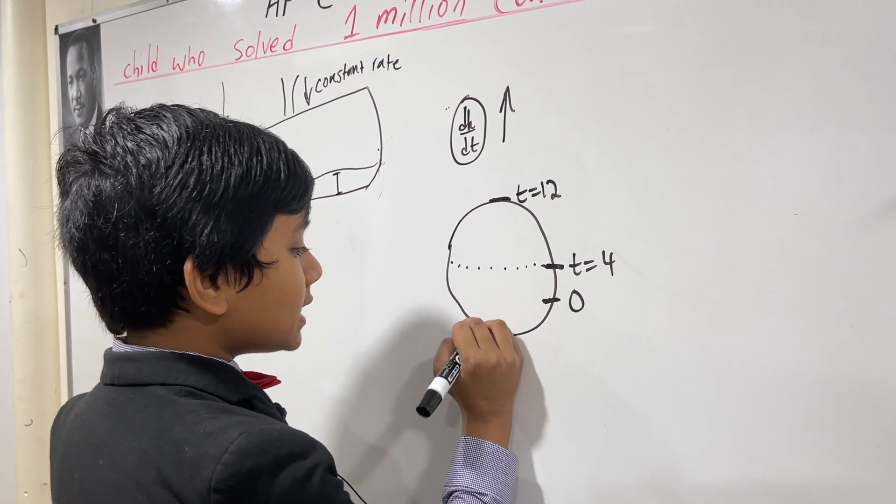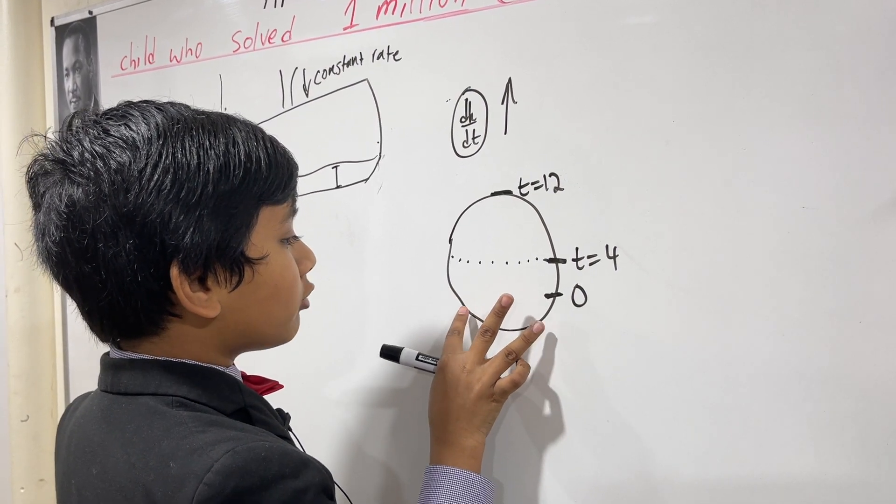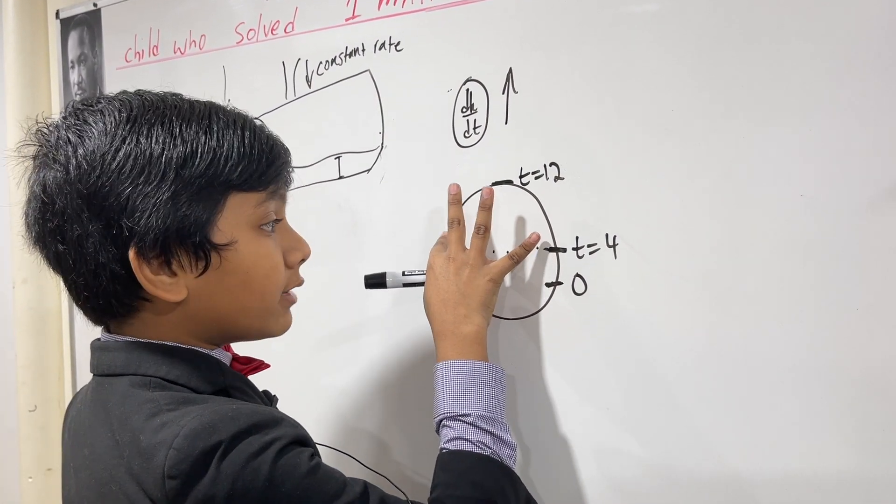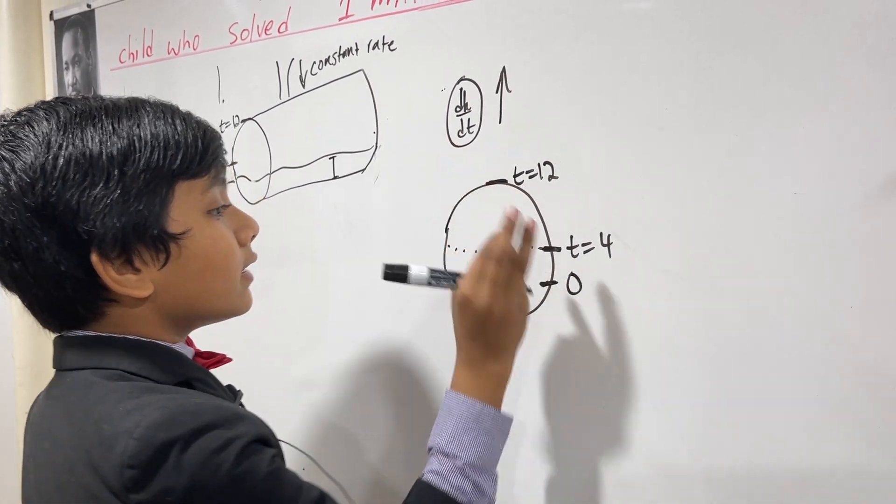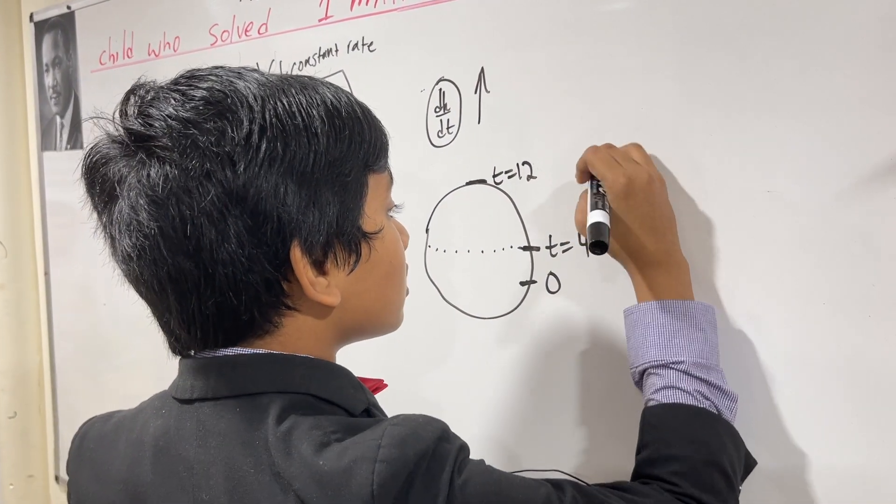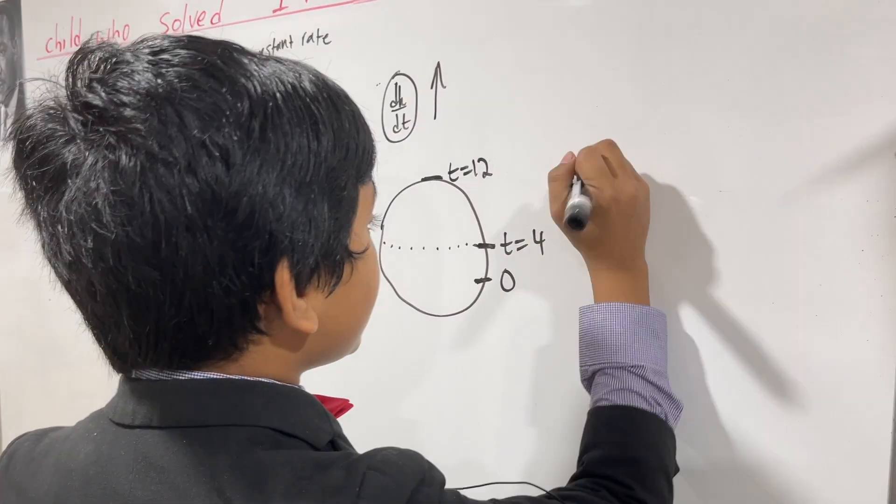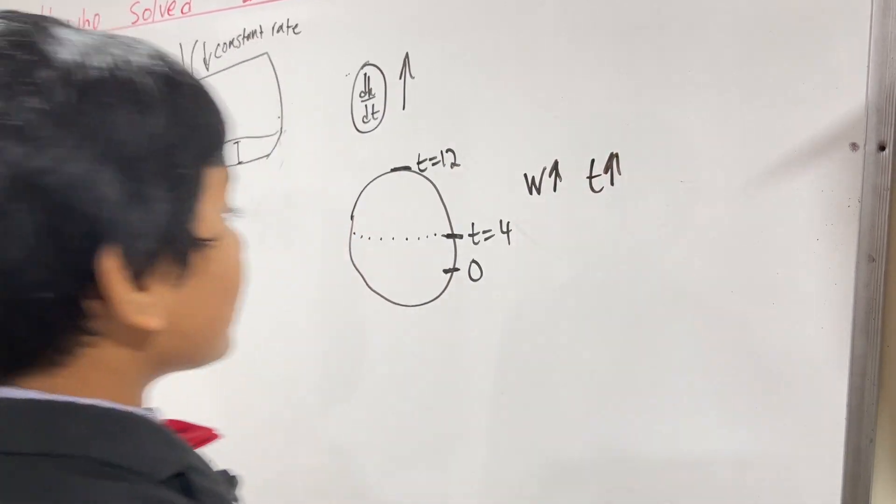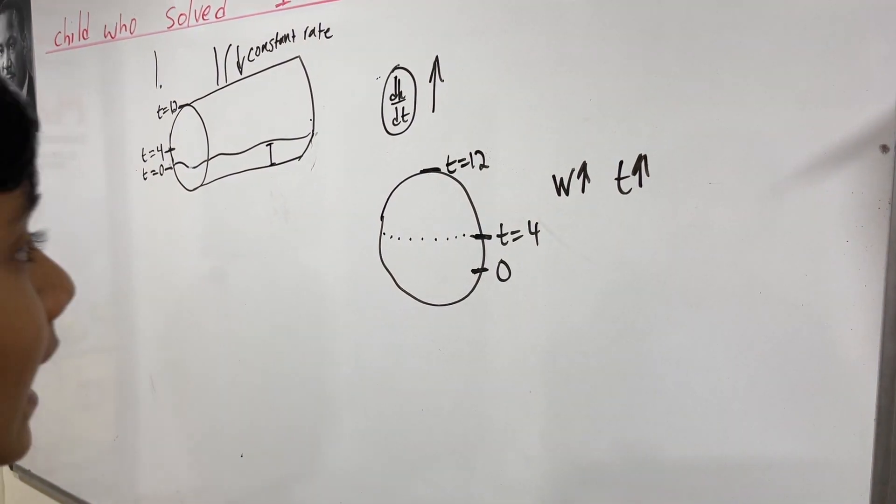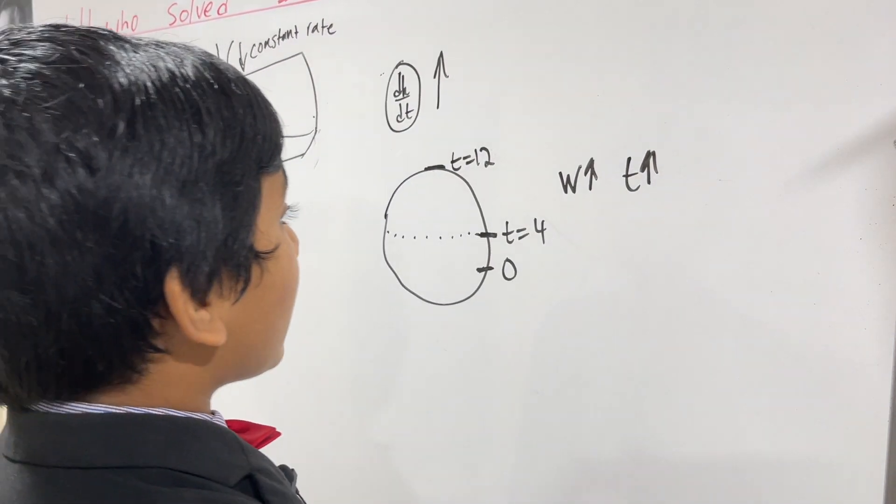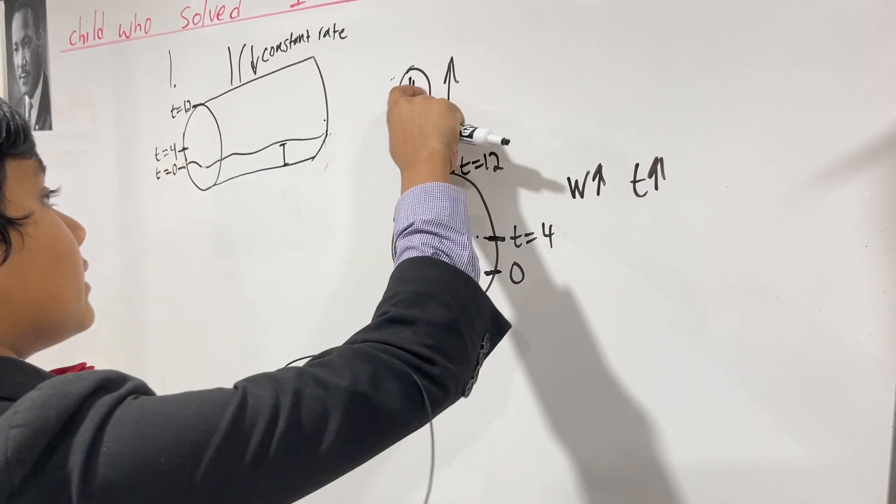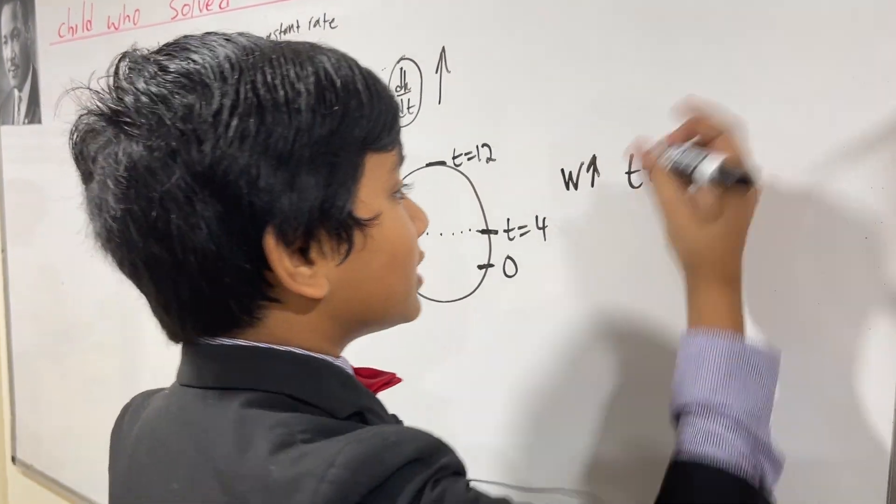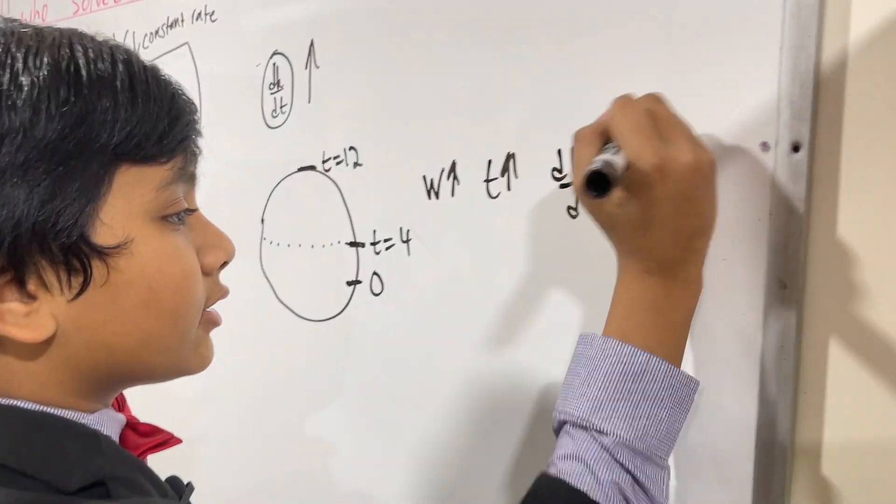Well, that means the width of the circle increases from here until here, and then the width starts decreasing. If the width is increasing, then the time to fill up that layer increases as well. And if the time increases, then the rate at which the depth changes will decrease since it's flowing at a constant rate.